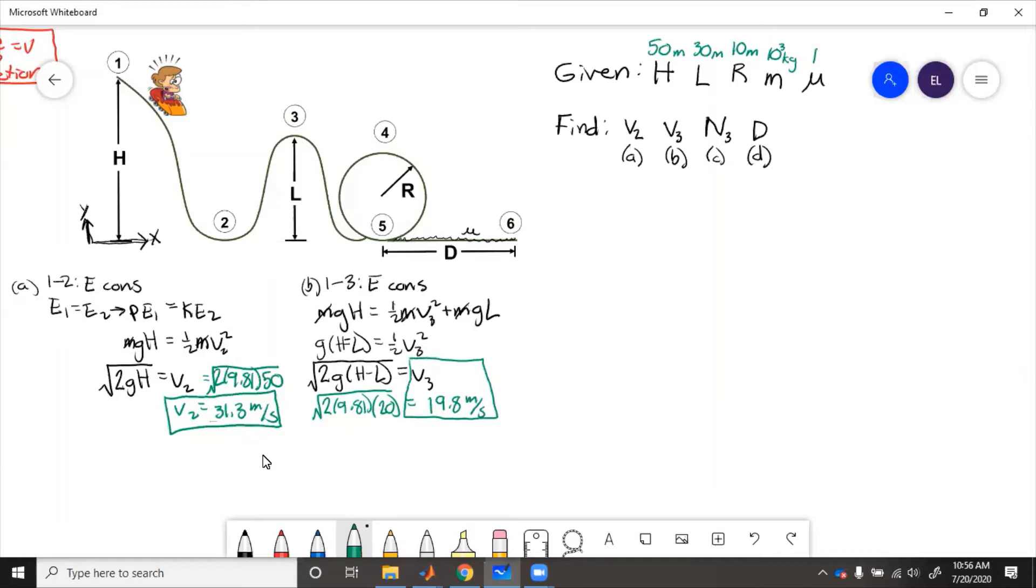And then velocity three here is less than velocity two, which makes sense because if it's going zero at the top, it should be going fastest when it reaches the bottom, and then it should be going somewhere in between when it's at the height of the top of the next hill. So 19.8 is in between zero and 31.3, so that gives us confidence that this answer is correct.